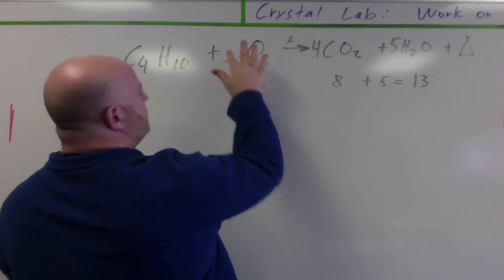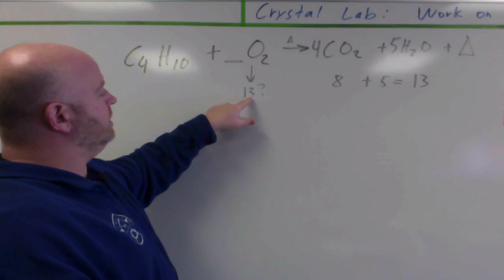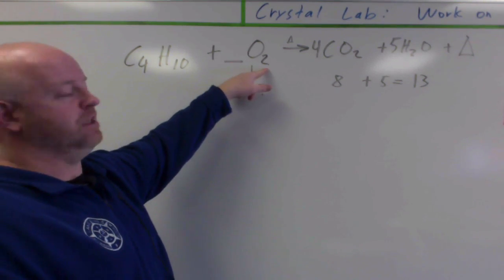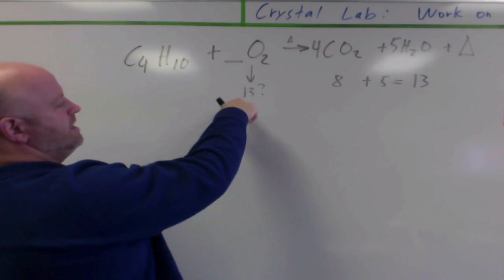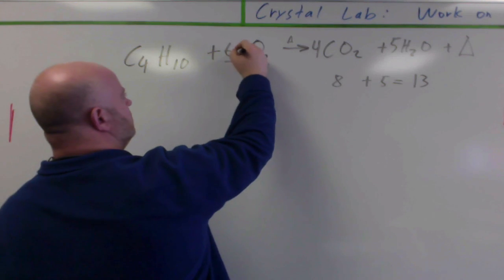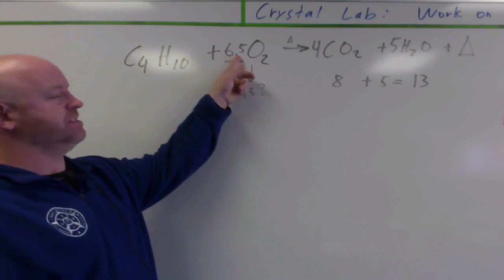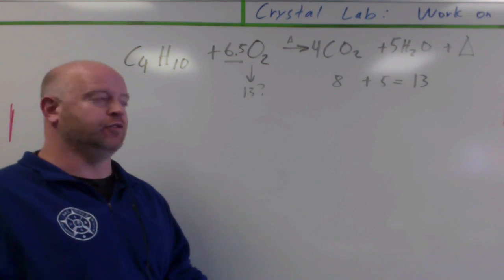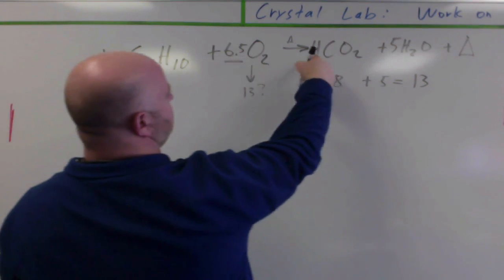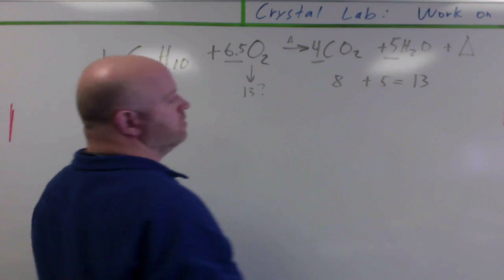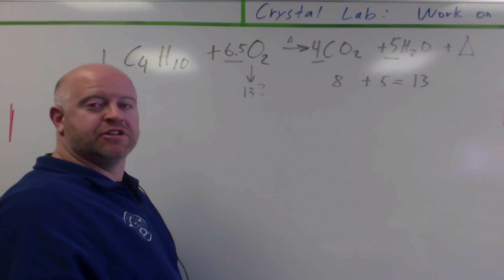Anything times two won't give an odd number, so nothing I can put in will give me thirteen whole. A little trick with balancing combustion reactions: balance your carbons, balance your hydrogens, and then do your oxygens last. Instead of using a whole number, use a fraction. I want thirteen, so six and a half times two gives thirteen. You can't have six and a half in a balanced equation as a final answer, but it is balanced.